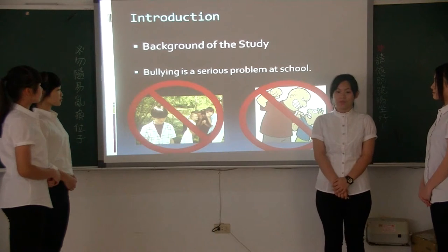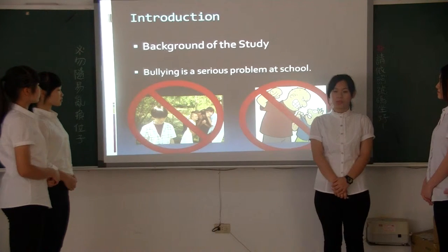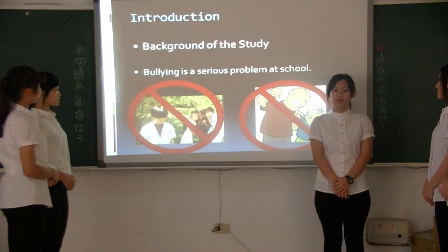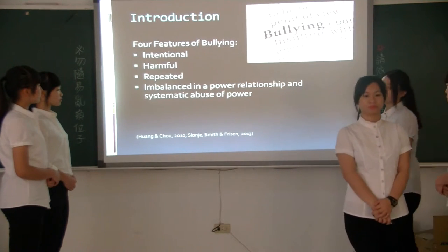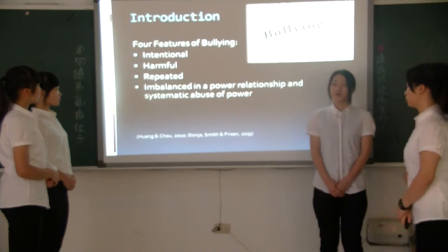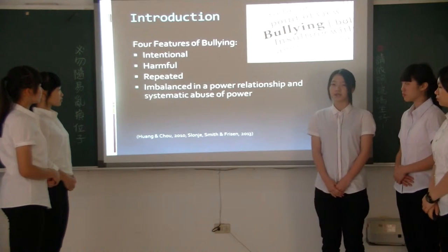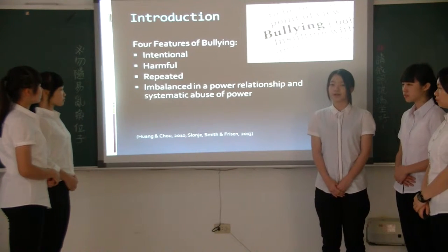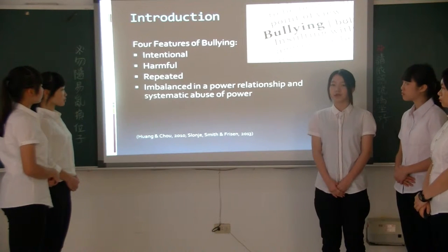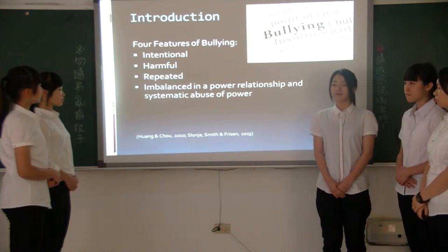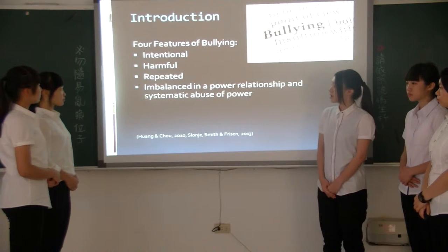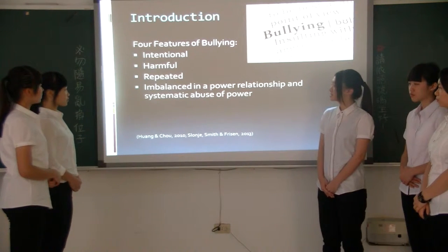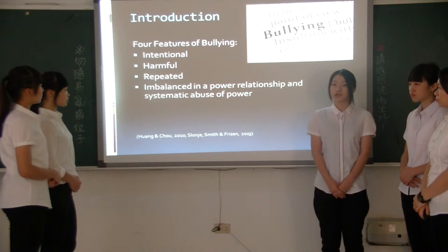Bullying is a very serious problem at school now, so the government and schools want to stop it. But what is bullying? Bullying is an aggressive behavior that harms others. In general, there are four features: intentional, repeated, and imbalanced in relationships.